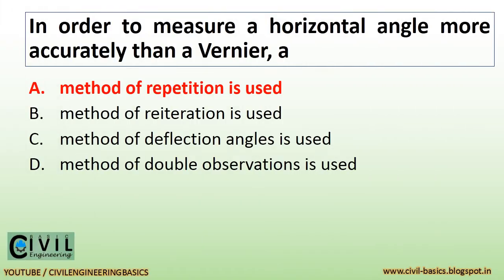In order to measure a horizontal angle more accurately than a vernier, a method of repetition is used.